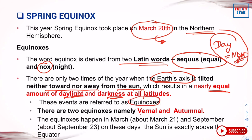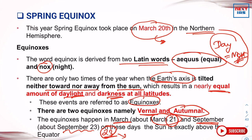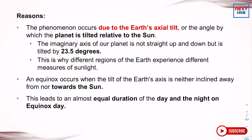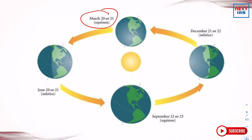There are two equinoxes — the vernal and the autumnal. One occurs around March 21st and the other around September 23rd. These dates are not fixed and can shift by a day or two each year because each year has a little extra time in it. This year the equinox was on March 20th. The other two key positions are called solstices.